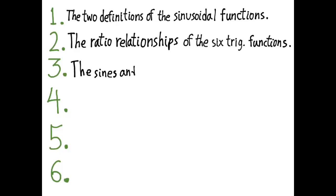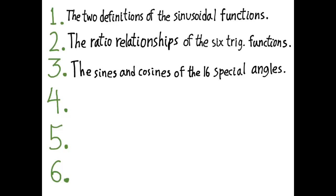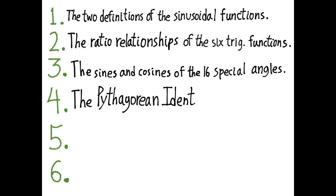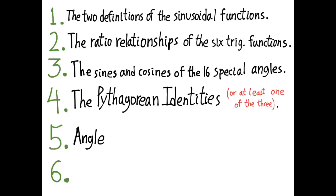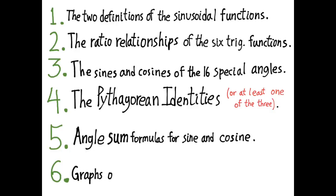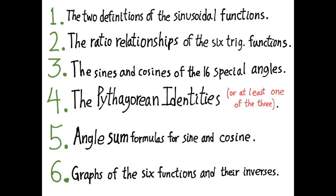The third thing you need to know is what the sines and cosines of certain special angles are — you should be able to find them without a calculator. The fourth is the Pythagorean identities; there are three, but you really only need to know one because you can derive the other two. Fifth, the angle sum formulas for sine and cosine. And finally, you need to understand what the graphs look like for the six trig functions and also the six inverse or arc trig functions.